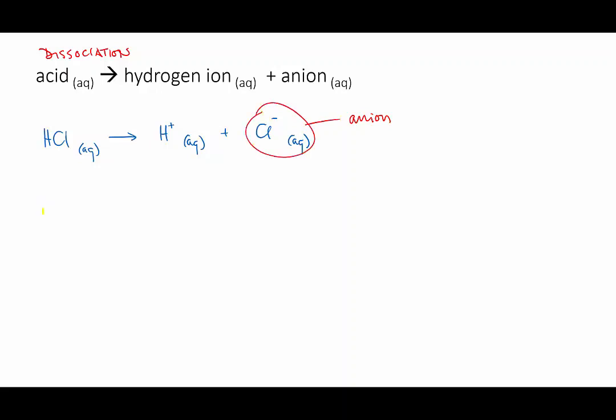Acetic acid, which is the acid in vinegar, has this structure. When it dissociates, it gives a proton and the acetate ion.